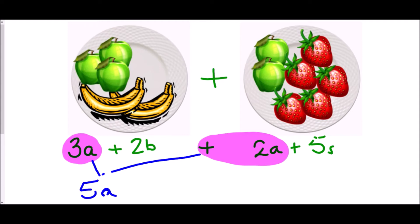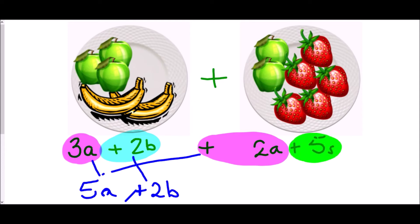I'm going to use a highlighter to identify like terms. I have three apples on one plate and two apples on the second, so 3A plus 2A equals 5A. The bananas: positive 2B has no like term on the second plate, so that remains as plus 2B. The strawberries were only on the second plate, so that remains as plus 5S. This is a simplified expression - we've taken like terms and collected them together.